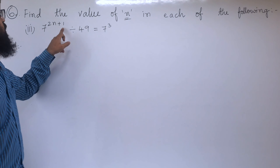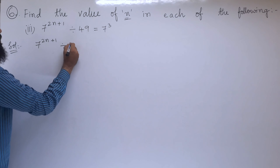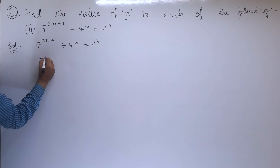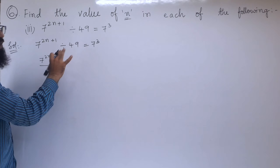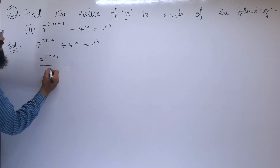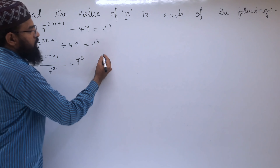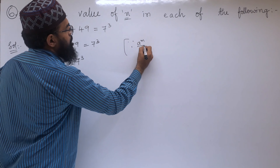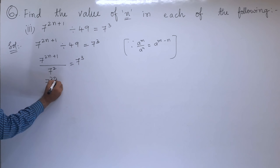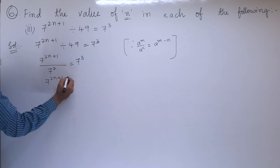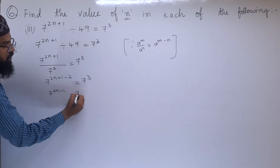Third part: 7^(2n+1) ÷ 49 = 7³. We write 7^(2n+1) divided by 49 equals 7³. Now 49 means 7 squared, so we can write 7^(2n+1) ÷ 7² = 7³. When the denominator comes to the numerator, it becomes negative, so we get 7^(2n+1-2) = 7³, which gives 7^(2n-1) = 7³.